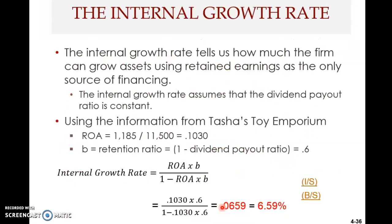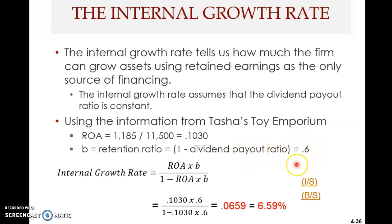That is the internal growth rate. Applying this to the Tasha Toy Emporium example: ROA is 1185 divided by total assets 11,500, which is roughly 10.3%. The retention ratio is 1 minus the dividend payout ratio of 40%, giving 0.6. Applying the IGR formula gives an internal growth rate of approximately 6.59%.